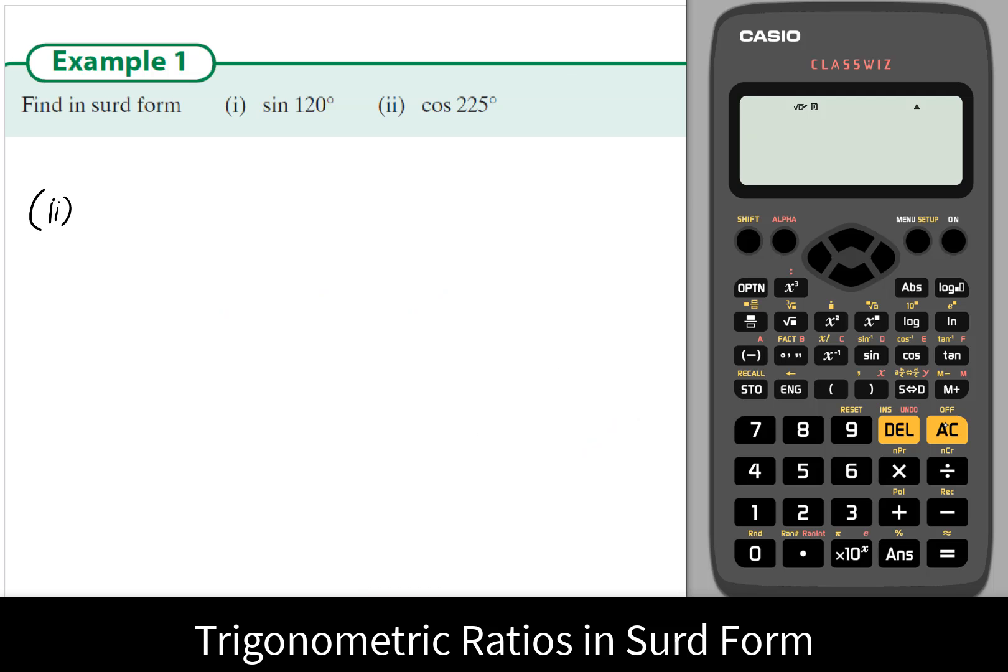In question 2, we've been asked to evaluate cos of 225 degrees. Using the calculator, we can see that just typing it in gives the answer in surd form. The answer is negative root 2 over 2, and it relates to cos of 45 degrees, but it's negative.